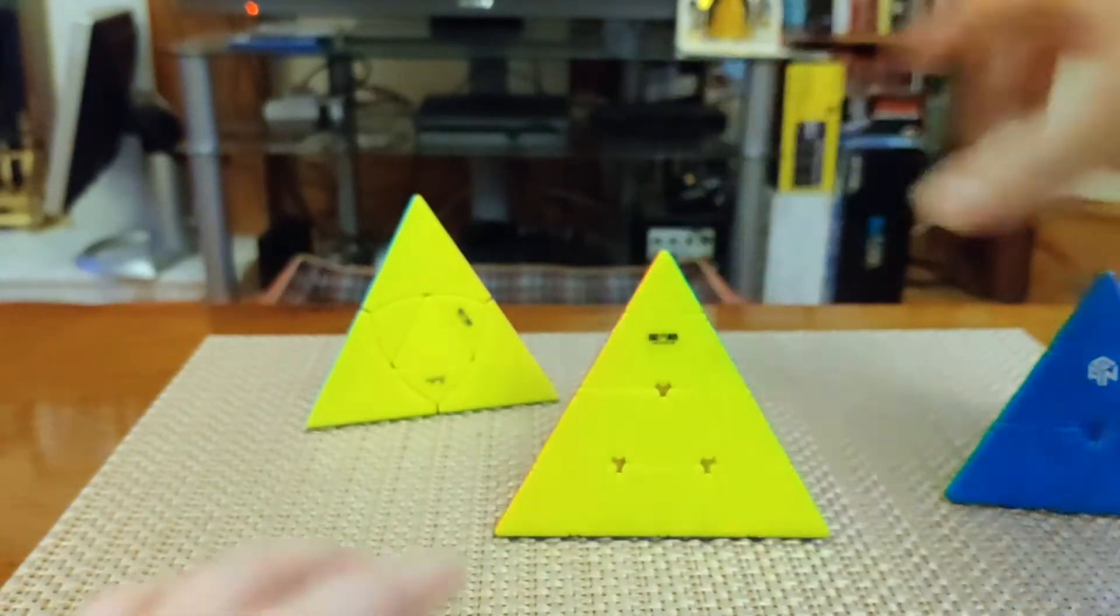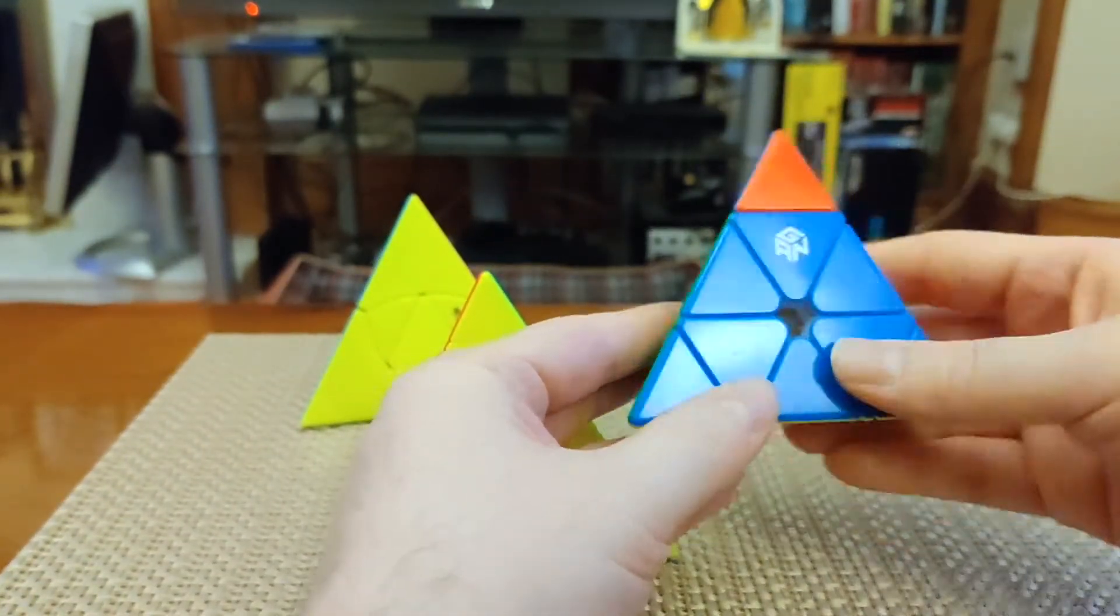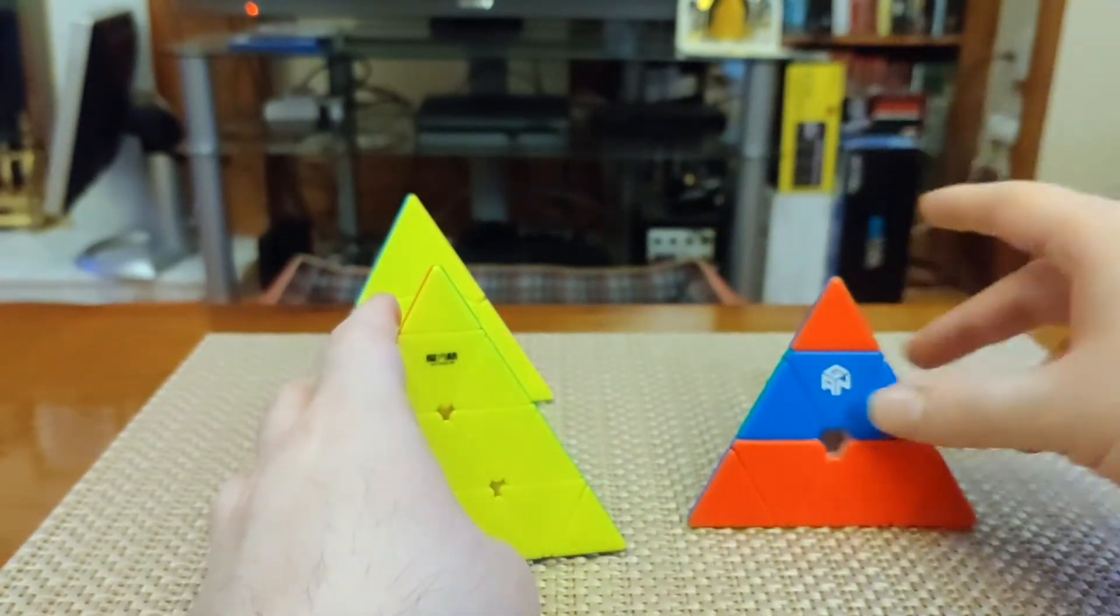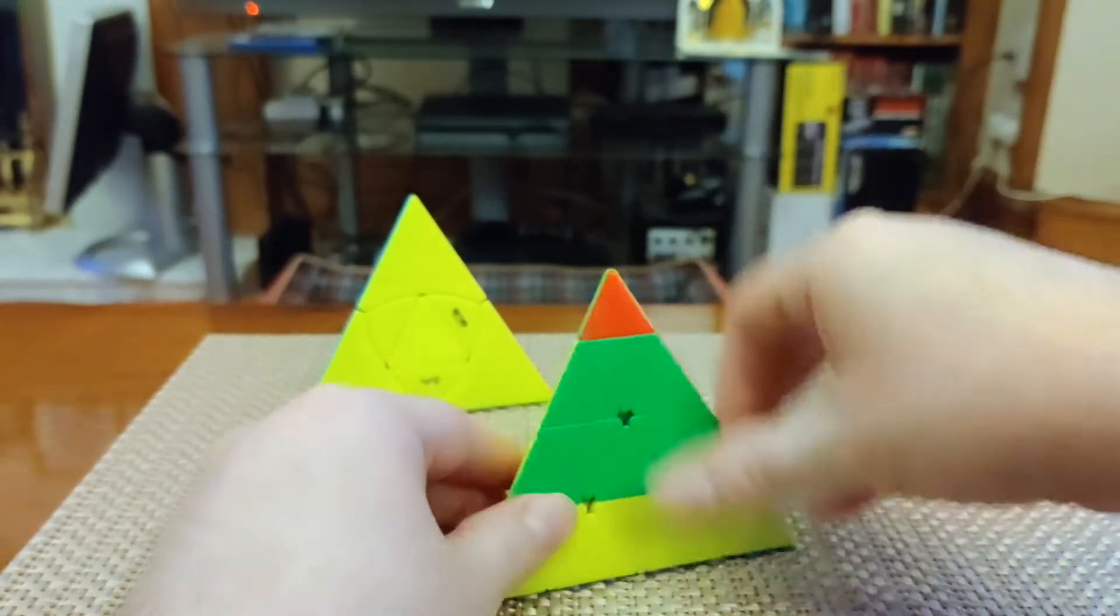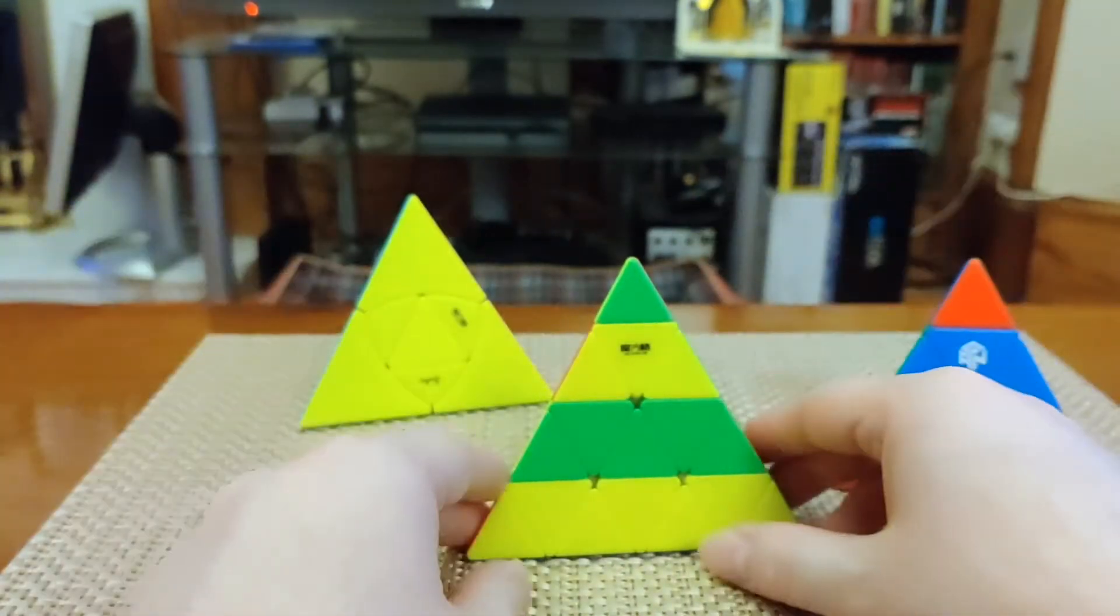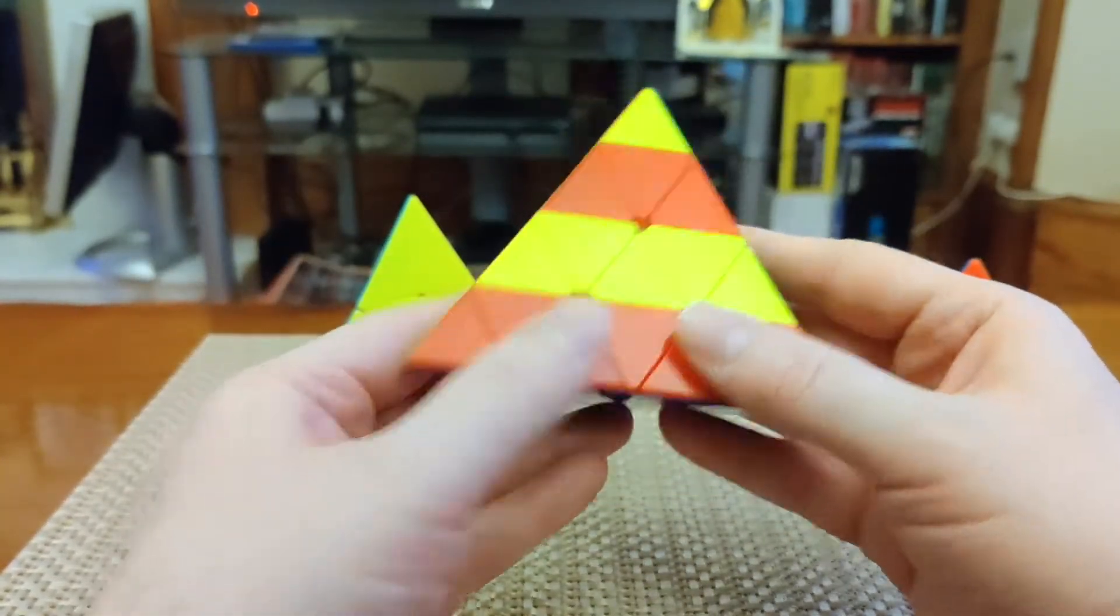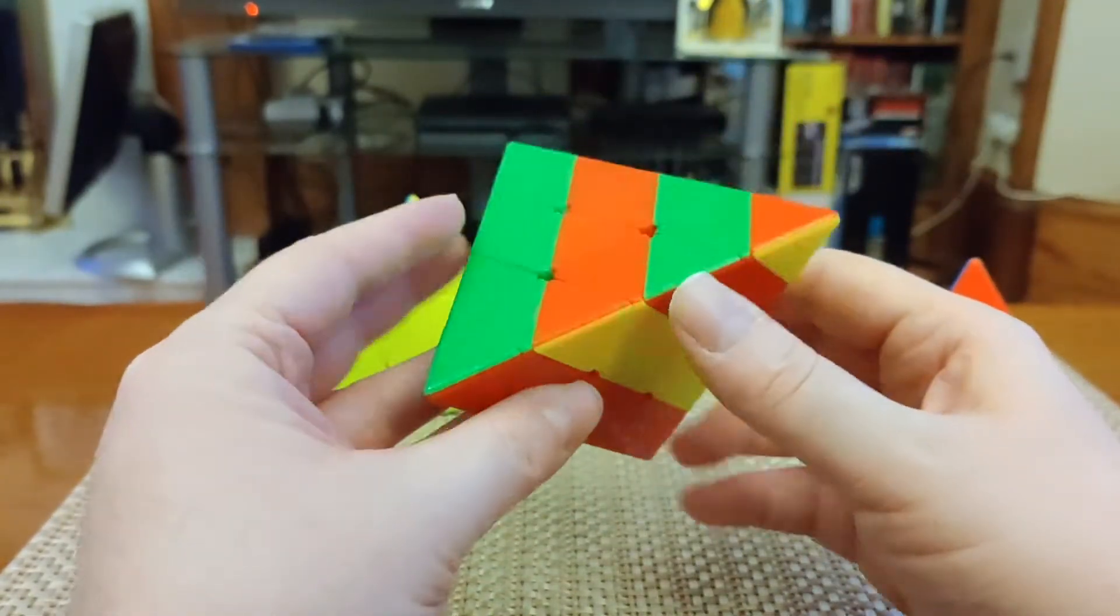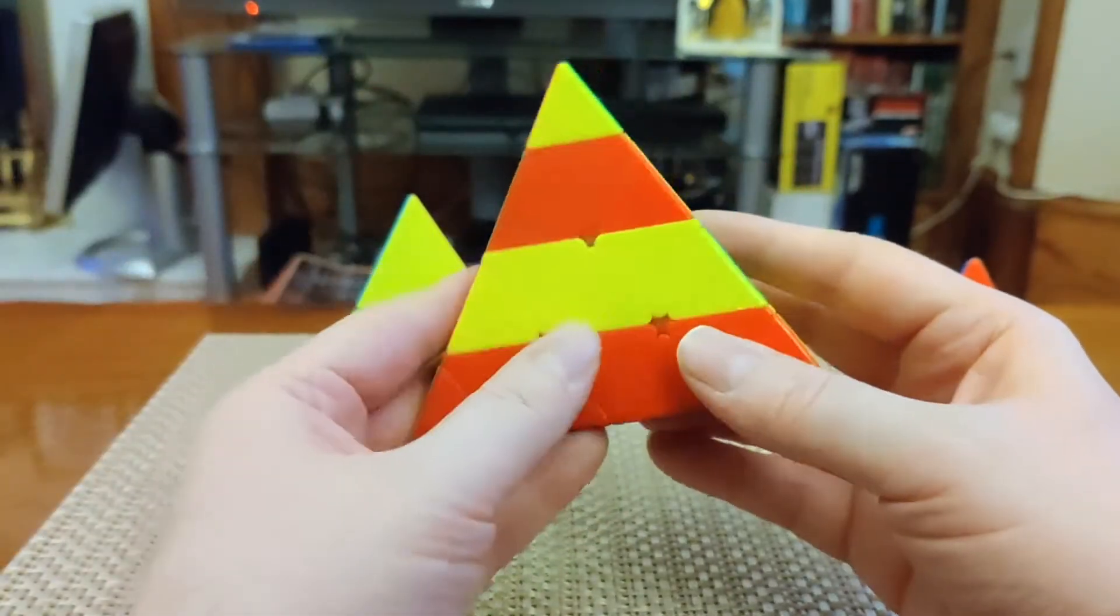The Master Pyraminx. On the Pyraminx, we have three layers - trivial tips, the middle layer and the bottom. On the Master Pyraminx, we can add one more to that. So now we have four layers. There's a lot more pieces here to solve and that adds a lot of interest. You can solve it a few different ways - by reduction, which is what I'm going to do in the walkthrough solve, or you can solve it directly.